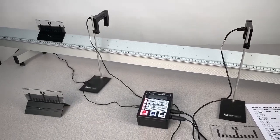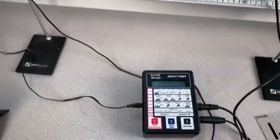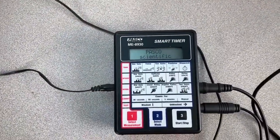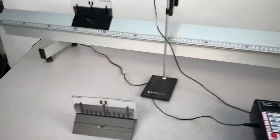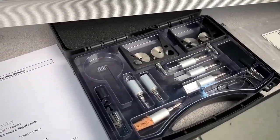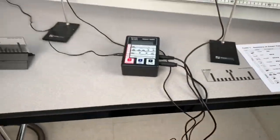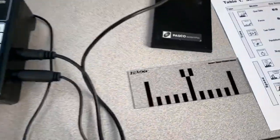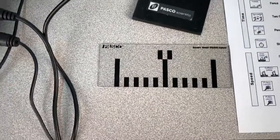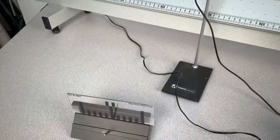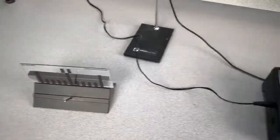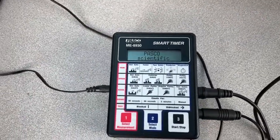Today we're looking at Pasco's Airtrack system and how it works with the smart timer photogate system. The Airtrack comes with the two meter track along with these carts and an accessory kit you see here. The photogate system comes with these picket fences, and it comes with two picket fences. I've actually taped the two onto the carts.